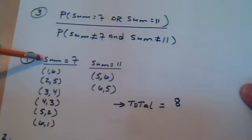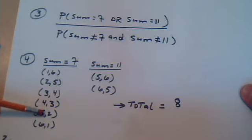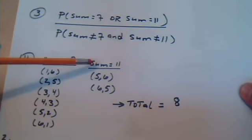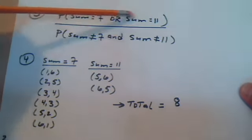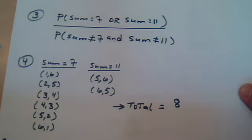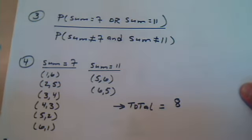So, how many pairs of dice, when you toss them, have a sum of 7? And these are the ones that have a sum of 7. There are 1, 2, 3, 4, 5, 6. And how many have a sum of 11? 1, 2. So, for the top, the numerator probability, there's a total of 8 ways a sum of 7 or a sum of 11 can fall.